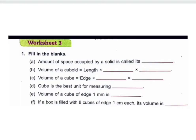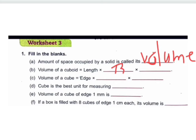Hello students, today we are doing worksheet three of unit 30. Question number one is fill in the blanks. The amount of space occupied by a solid is called volume. That is the definition of volume. Volume of a cuboid is length multiplied by breadth multiplied by height.